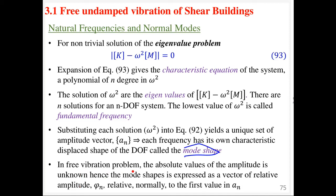In free vibration, the absolute values of the amplitude are unknown. Hence the mode shape is expressed as a vector of relative displacements, using the symbol φ (phi). Usually, the relative value is normalized to the first value of A. Each value of frequency produces a unique set of amplitude vectors — that amplitude and displacement shows that every frequency has its own characteristic displaced shape, which we call the mode shape of vibration.